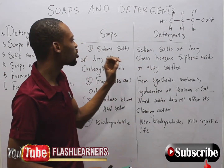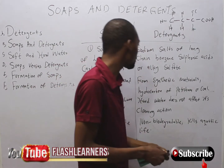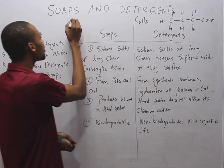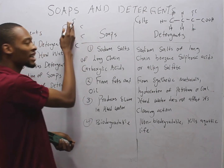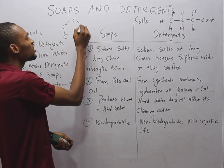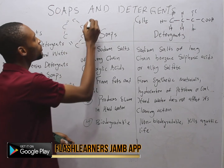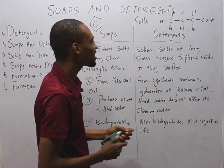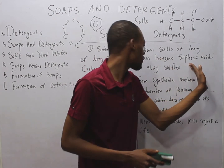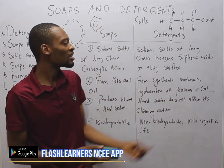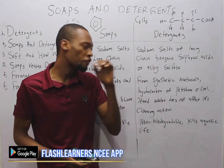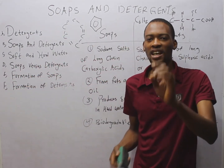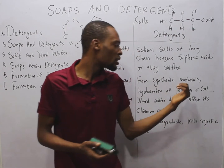Here we have detergents — they are sodium salts of long-chain benzene sulfonic acids, or alkyl sulfates. Benzene is a ring structure containing six carbons with alternating double bonds: double, single, double, single, double. Detergents can be formed from long-chain benzene sulfonic acid or alkyl sulfate. Now, soaps are from natural sources — fats and oils. While detergents are from synthetic materials: hydrocarbons of petroleum or coal.